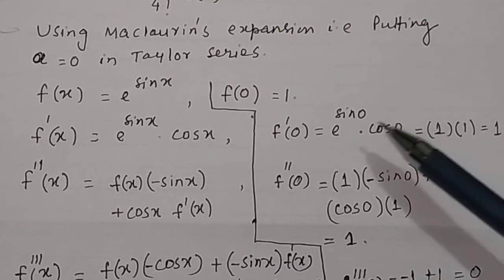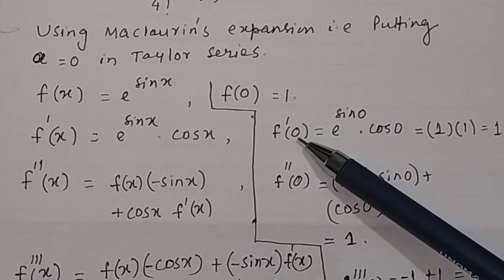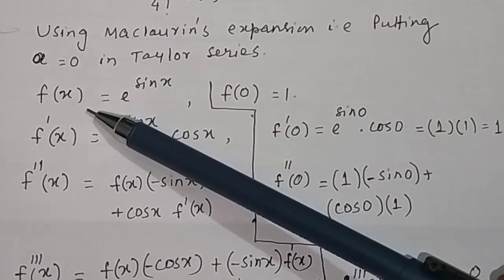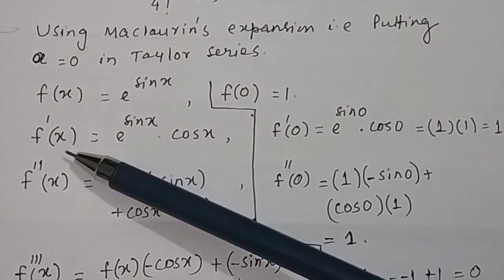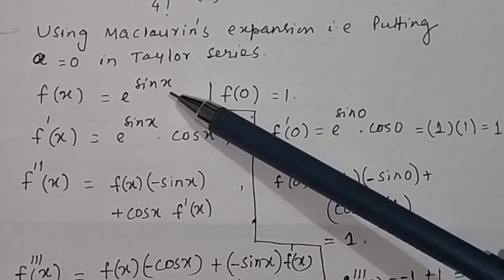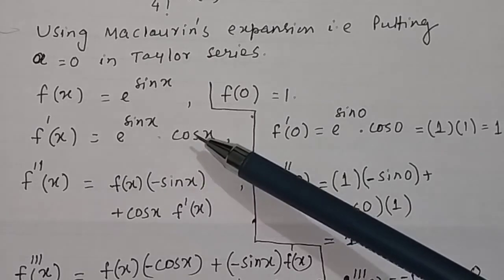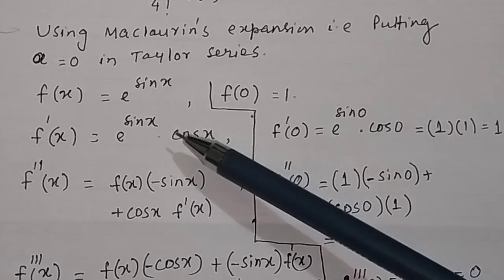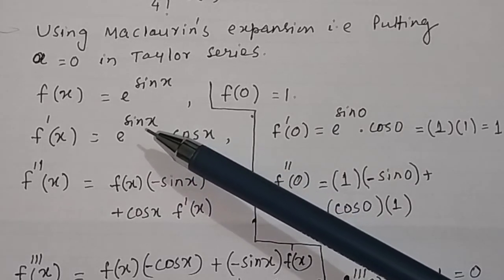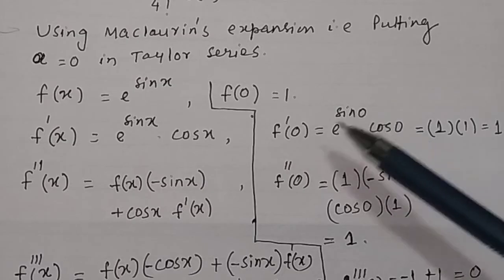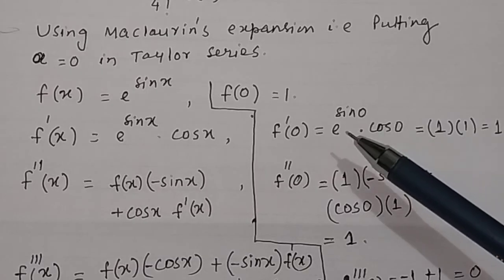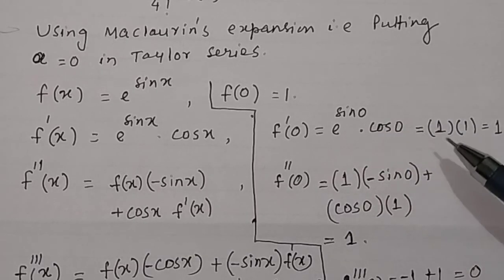Then we find out the first derivative of the function at a equal to 0. Differentiating f(x) with respect to x, f'(x) is equal to e to the power sin x times cos x. Putting x equal to 0, f'(0) equals e to the power sin 0 times cos 0. Since e to the power 0 is 1 and cos 0 is 1, f'(0) is equal to 1.